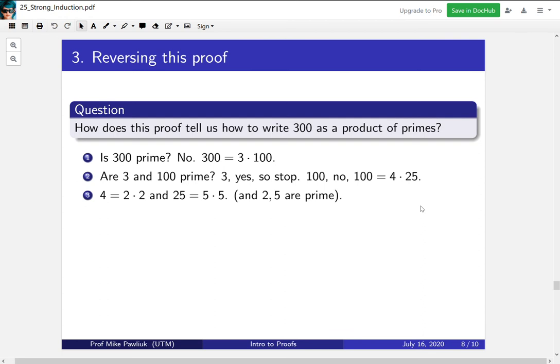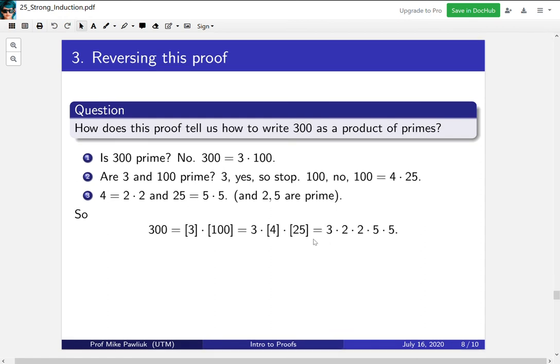So now we apply the recursive step on that again. Well, 4 isn't prime, it's 2 times 2, and 25 is 5 times 5. And then when we ask the recursive question again, well, everything will be prime. The 2s, the 5s, and the 3. So this tells us that when we're breaking down 300 recursively, we write it as 3 times 100, then we don't do anything to 3, we break down 100 into 4 times 25, and then we break down each of these into their constituent factors. The square brackets here aren't really important, other than to just indicate where the splitting is happening.